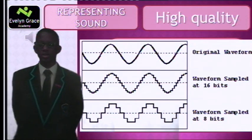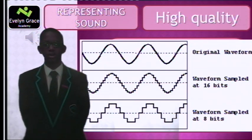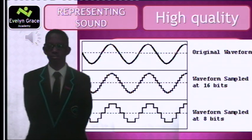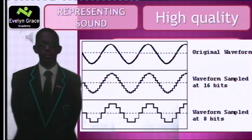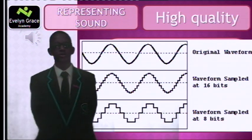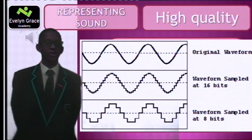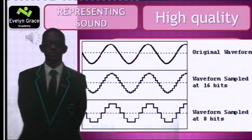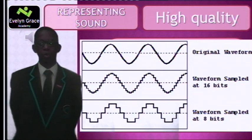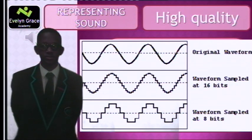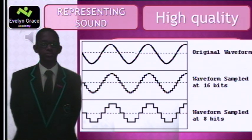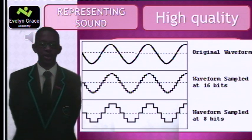Here is the high quality sound, which was measured at 16 bits. As you can hear, that was very good sound. Now here is the version measured at 8 bits, which is low quality. Try and see if you can spot the difference. There was a little difference but you might not be able to notice it as it could be very difficult.